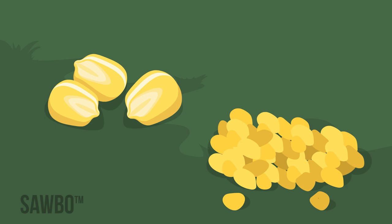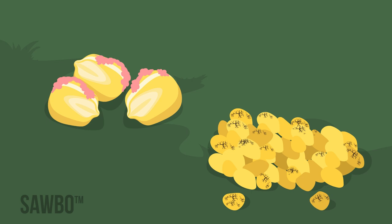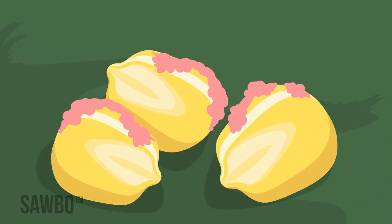One group of these microorganisms is called molds, and they can grow on foods and animal feed to the point that we can see them. While growing in grains, nuts, and fruits, some molds can produce harmful compounds known as mycotoxins that are invisible to the eye.